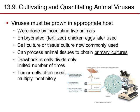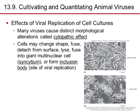Viruses must be grown in an appropriate host cell. Live animals were initially used; then embryonated fertilized chicken eggs were used to grow viruses, and now cell cultures or tissue cultures are commonly used. Remember that flu viruses are grown in eggs, so people allergic to eggs or chickens cannot take the flu vaccine through that route. Animal tissue can be processed to create primary cultures, though the drawback is cells divide only a limited number of times. Many viruses can cause distinct morphological alterations called the cytopathic effect — cells may change shape, detach, fuse into giant multinucleated cells (syncytium), or form inclusion bodies at the site of viral replication.